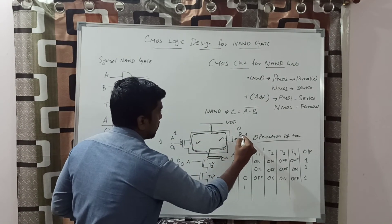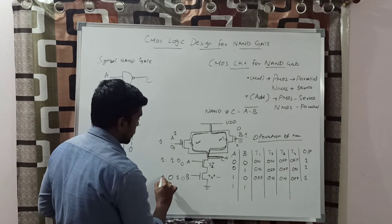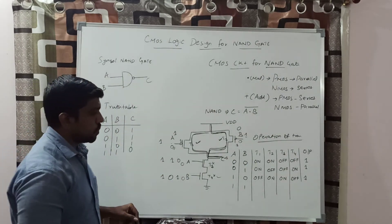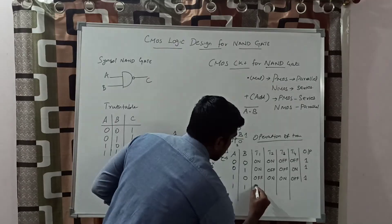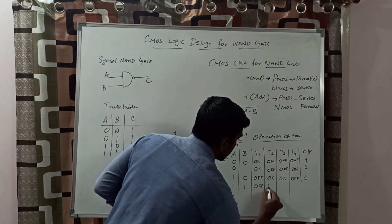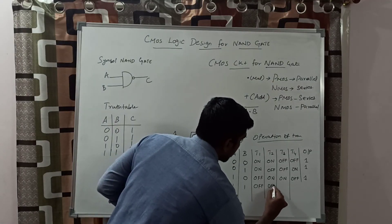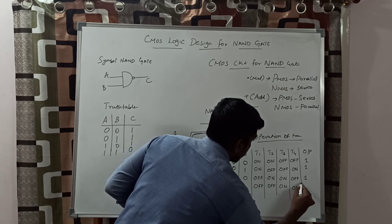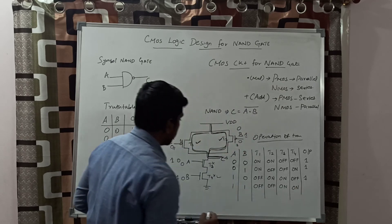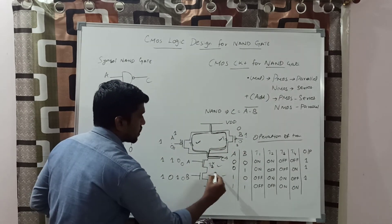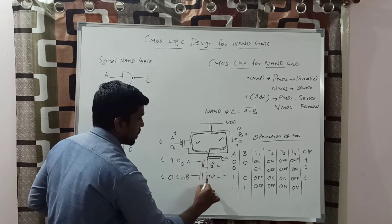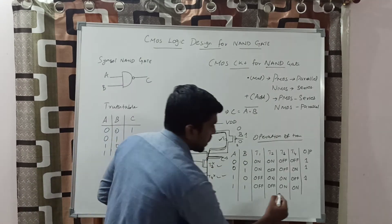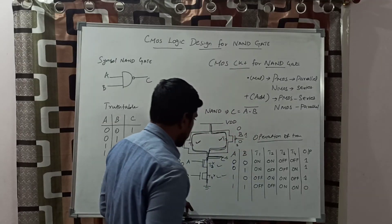Final case: A=1 and B=1. The NMOS transistors have A=1 and B=1. T1 is off, T2 is off, T3 is on, T4 is on. These two transistors are turned on, connecting indirectly to ground. The final result is 0.